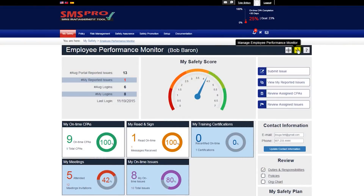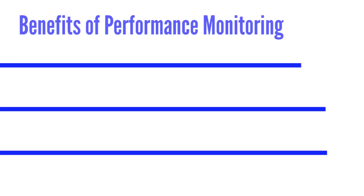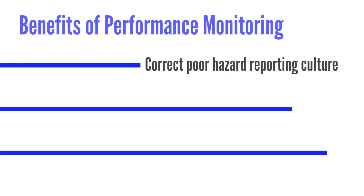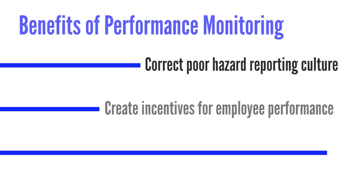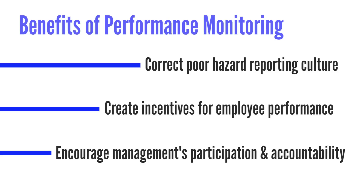The Employee Safety Performance Monitor allows safety managers to easily monitor any employee's safety performance. It is designed to correct poor hazard reporting culture and lack of employee participation, as well as encourage safety management's participation in the program as well.